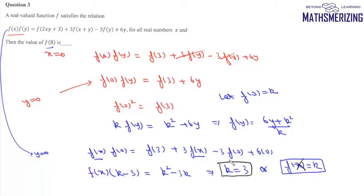With k = 3, we can write f(y) = (6y + 9)/3 = 2y + 3.